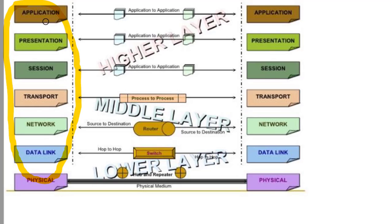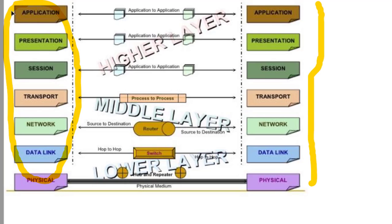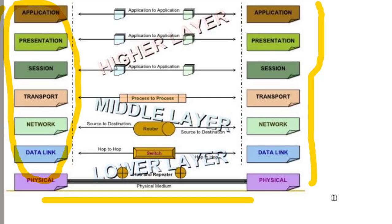First you have an application that deals with some data. Then it is represented through the session, and data flows from Application to Presentation, Presentation to Session, Session to Transport, Transport to Network, then Data Link, then Physical. It then transforms into physical signals to the other computer's physical layer, then goes up: Physical to Data Link, then Network.